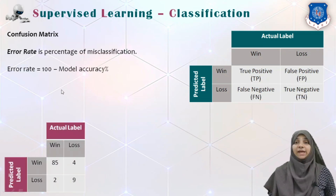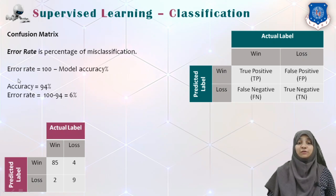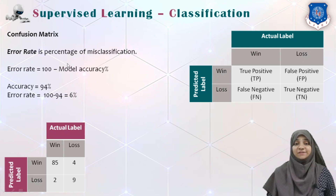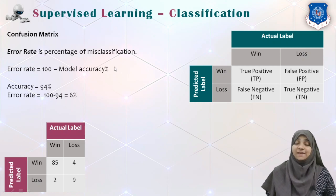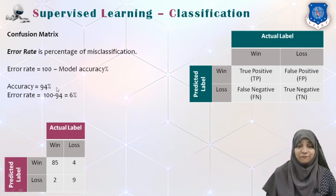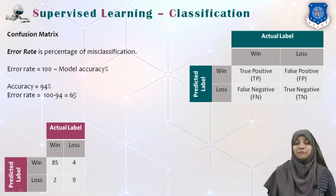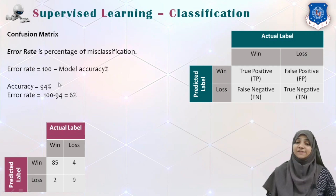Similarly, the error rate of a classification model is the percentage of misclassification. It is the reciprocal of accuracy. Whatever the accuracy is, if you take the difference from 100, you get the error rate. Error rate = 100 minus the model's accuracy percentage. If accuracy is 94%, the error rate is 6%, which is 100 minus 94.